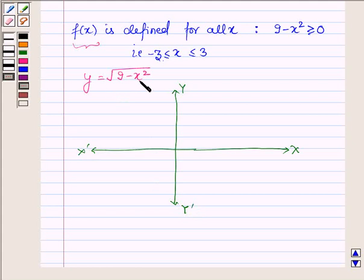Now graph of 9 minus x squared when x equals 3, suppose this point denotes 3, then y is 0. This is the point which denotes (3,0) and when x equals minus 3, suppose this is the point which denotes minus 3, then again y is 0. And when x equals 0, 0 lies in between this interval, then y equals 3. So this is the point which denotes (0,3).